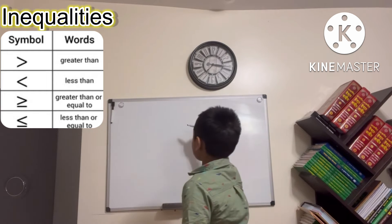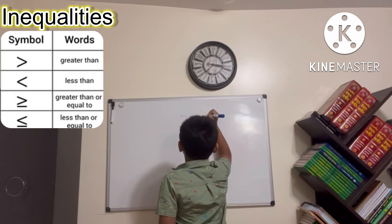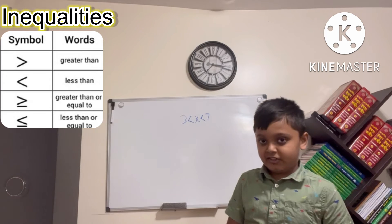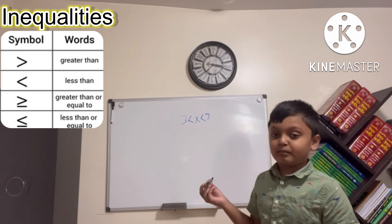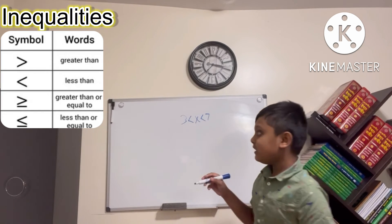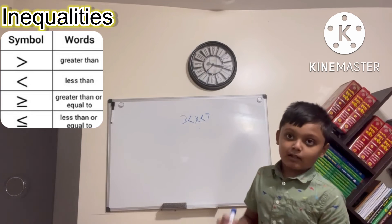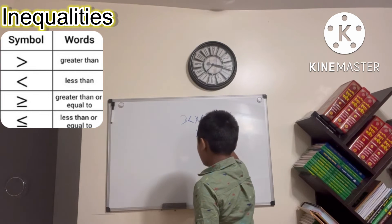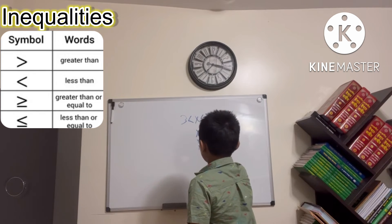You can also mix up any inequality. Let's say three is less than x, which is less than seven. The x is algebra, which you'll learn in a future video. X has to equal something between three and seven. The numbers between three and seven are four, five, and six — so x can equal four, five, or six.